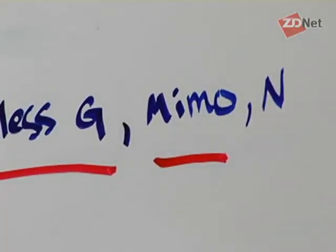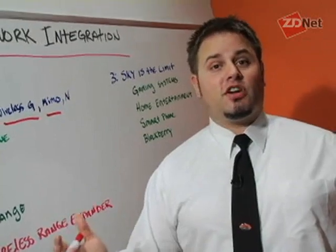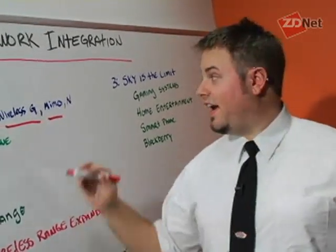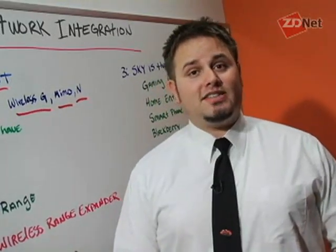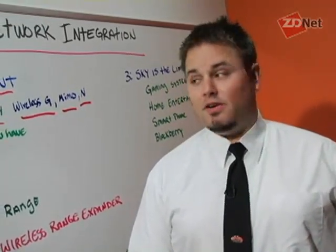There's MIMO, which is an expanded wireless. It allows for larger coverage of your home and faster transfer of files. And then there's Wireless N, which is the newest of the technologies, but it's also the least compatible with all the different devices out there.